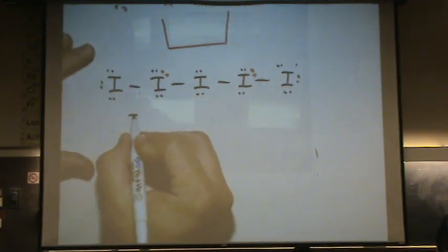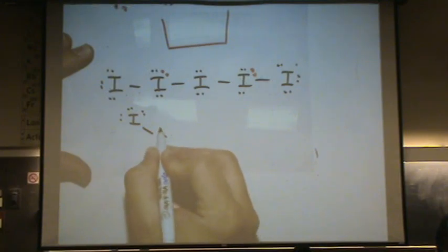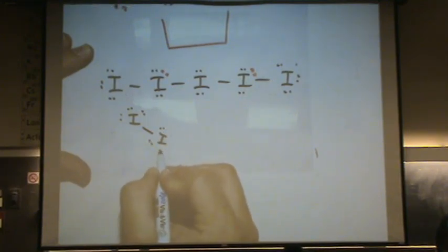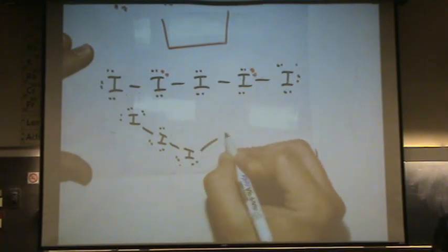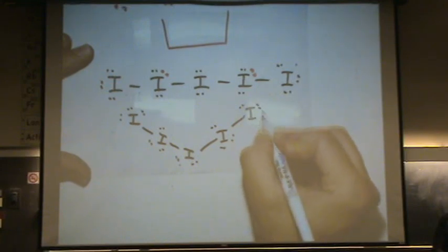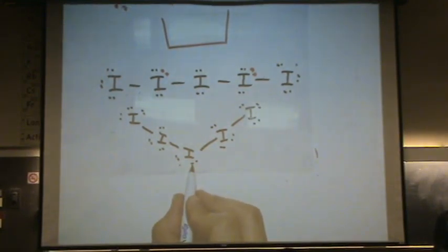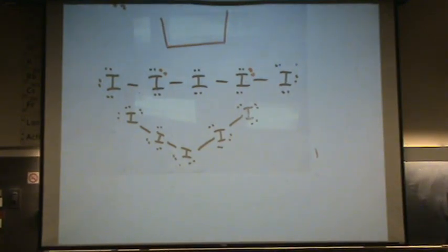Let me redraw it for you. Don't worry if you didn't get this right away or even yet. This is a difficult one. This is what it would look like. Again, the central one is bent. These two are linear on the outside center. That bent angle is 95 degrees according to the problem.